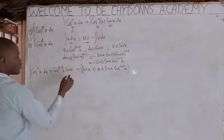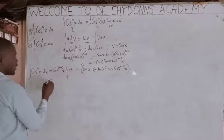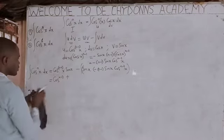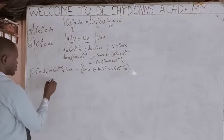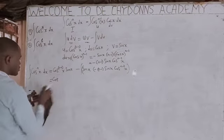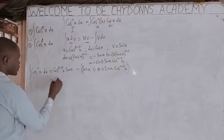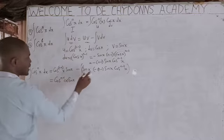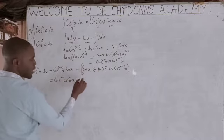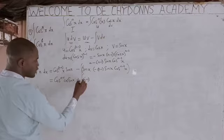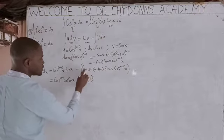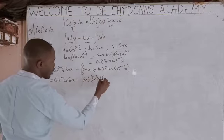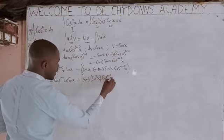This minus coming out will turn to be plus. So it equals cos^(n-1)(x)·sin(x), and minus times minus becomes plus, giving plus integration of (n-1) times sin(x)·sin(x)·cos^(n-2)(x), which is plus (n-1) ∫sin²(x)·cos^(n-2)(x) dx.